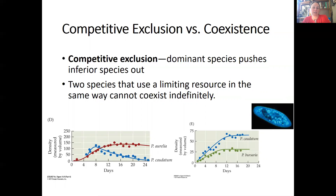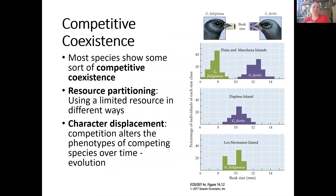Competitive coexistence is shown in figure E, where both species increase and each hits a carrying capacity at a different level. They coexist even while competing, though their carrying capacities may be lower than they would be in isolation. Most of the time you see some sort of competitive coexistence.